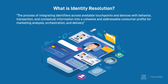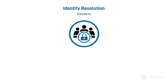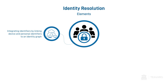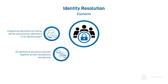...for orchestration and delivery. Let us have a closer look at the five elements of this definition. Identity resolution is the process of integrating identifiers. This is typically achieved by linking device and personal identifiers to an identity graph across touchpoints and devices.